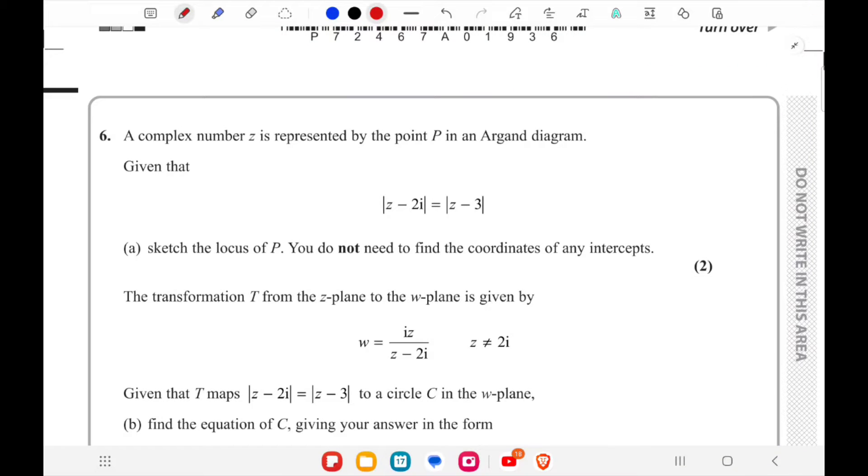For a sketch of the locus of P, this is (0,2) and this is (3,0). If you have the form |z - a| = |z - (a + bi)| equals |z - (c + di)|, it would be a perpendicular bisector between (a,B) and (C,D). So it's just going to be a perpendicular bisector between (0,2) and (3,0).